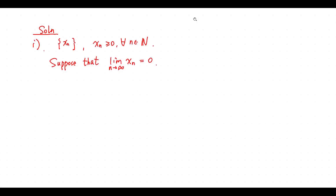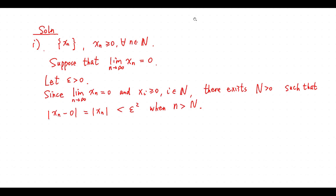Suppose that the limit of x_n equals 0. Let epsilon be a real number greater than 0. Since the limit of x_n equals 0 and x_n is greater than or equal to 0 for any positive integer n, there exists big N greater than 0 such that we have this inequality when n is greater than big N.